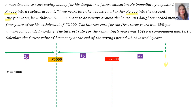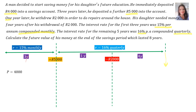The interest rate for the first three years was 15% per annum compounded monthly — and that is very important. So the interest rate, you write that one on top: R is 15% monthly. The interest rate for the remaining five years was 16% per annum compounded quarterly. You can see that solid green line there — R is 16% quarterly.